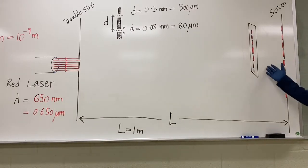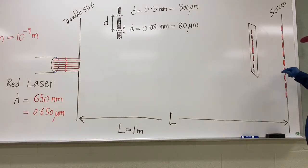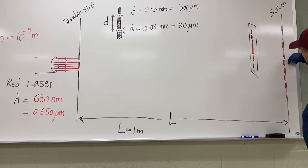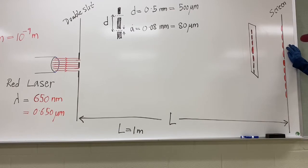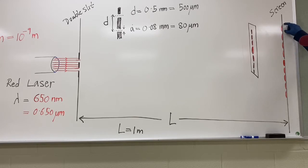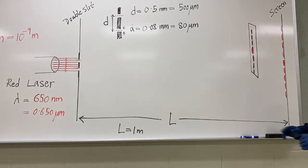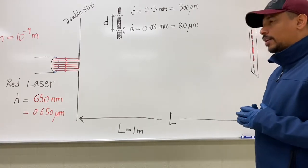So this is what we saw on the screen. There is a very bright spot — we call it the central maxima — at the center. When you go up or down from the central maxima, the brightness of the spots gradually decreases, but they are separated by dark regions with equal separation. To understand this observation, we need to treat light as waves.